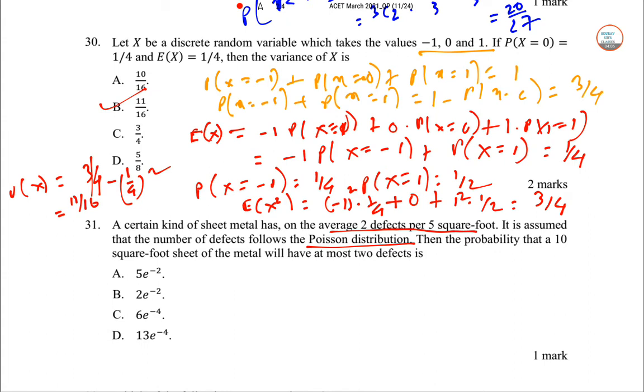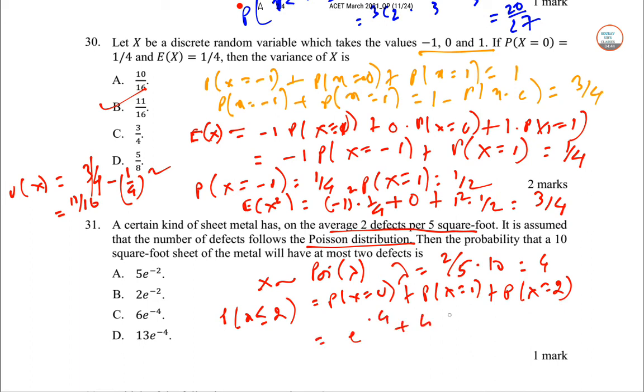For 10 square feet, X follows a Poisson distribution with λ = 4, since 2 defects per 5 square feet means 4 defects per 10 square feet. We need P(X ≤ 2) = P(X=0) + P(X=1) + P(X=2) = e⁻⁴ + 4e⁻⁴ + (4²/2!)e⁻⁴. The answer is D.